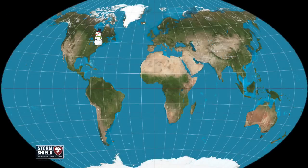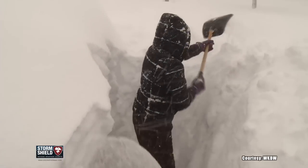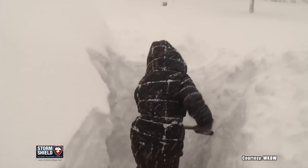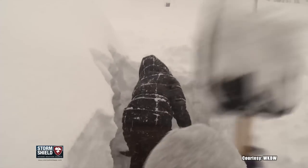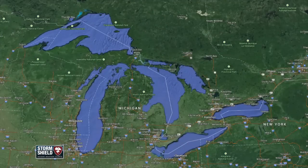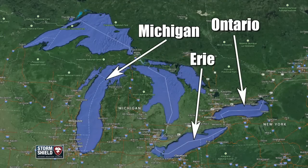All of the snowiest places in the world get as much snow as they do because of their proximity to a lake or an ocean, which enhances snowfall in the winter. In the United States, these are cities surrounding any of the Great Lakes, but especially Lake Ontario, Lake Erie, and Lake Michigan.